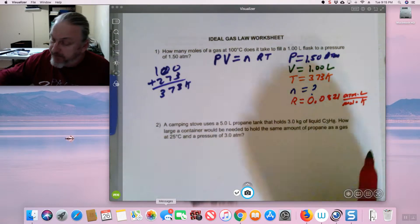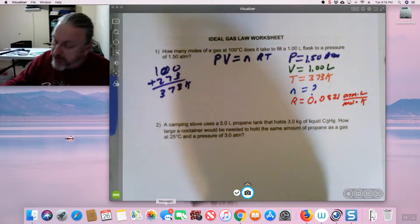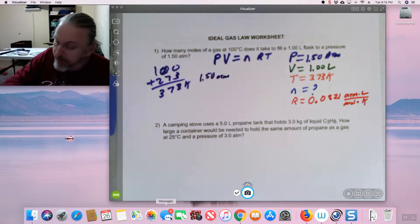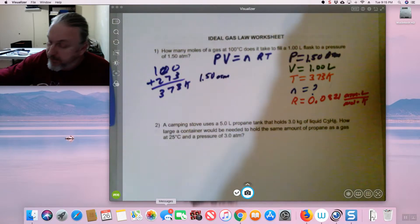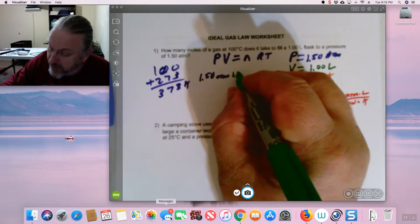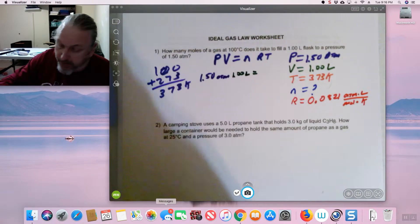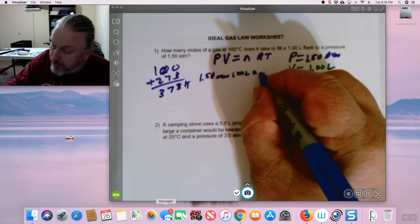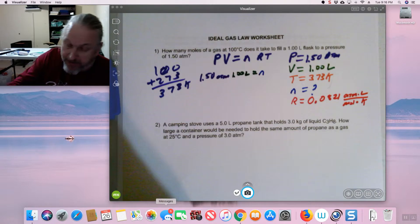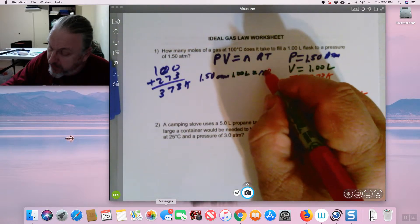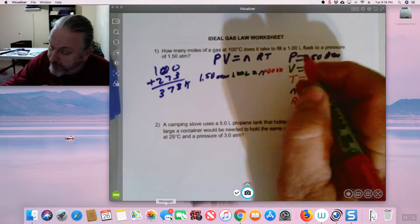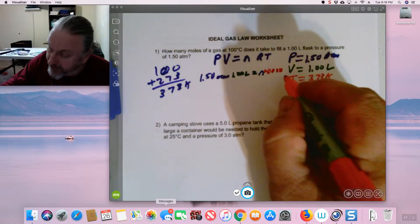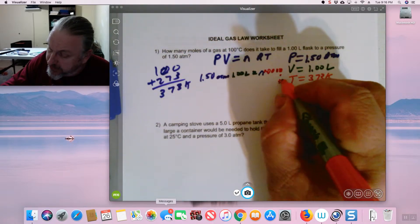And that's really important if you look at the formula. Let's go ahead and start subbing some stuff in. So my pressure is 1.5 atmospheres. My volume is 1 liter. My N, I don't know. My R value is 0.0821. And then my temperature is 373.